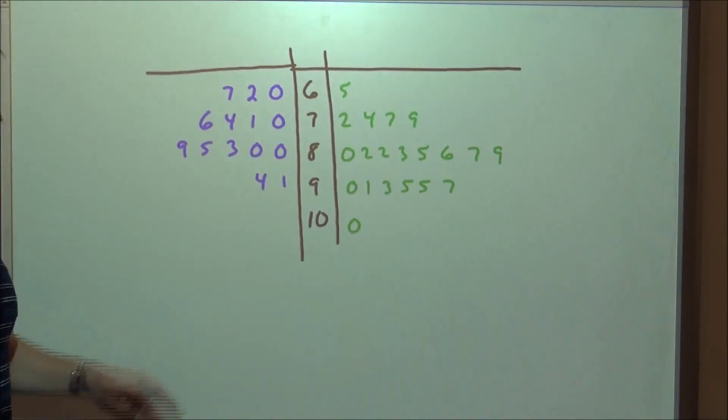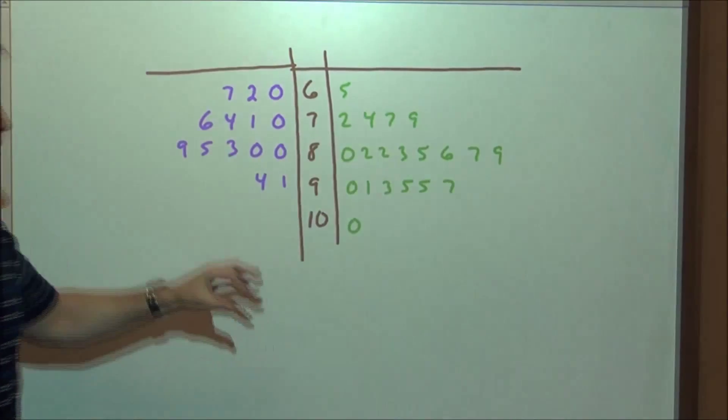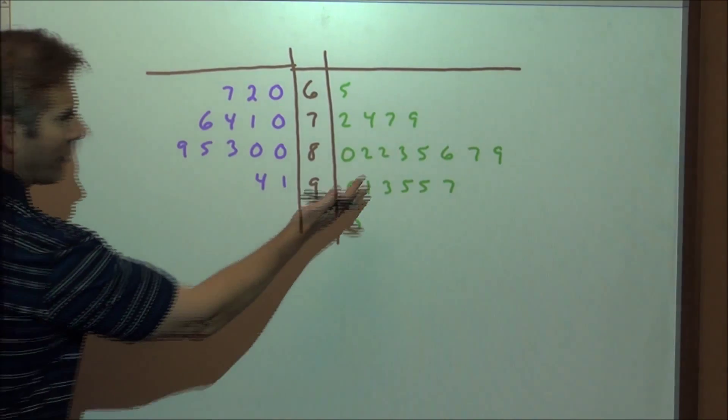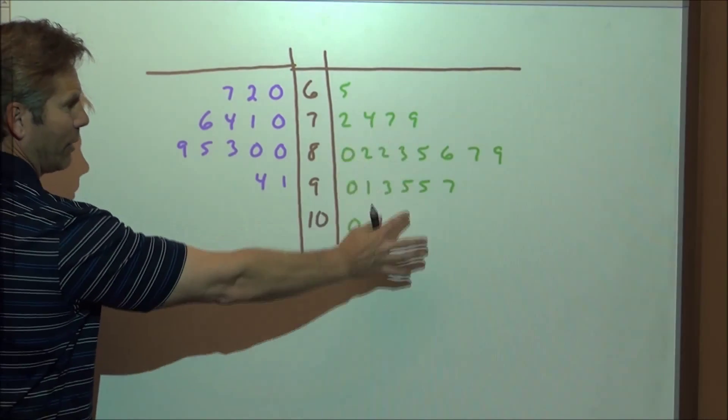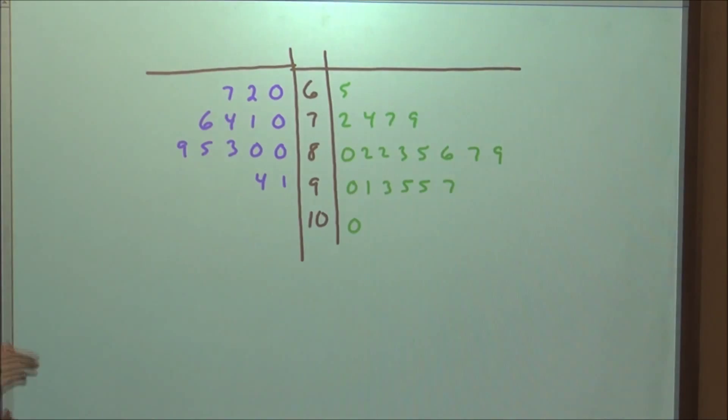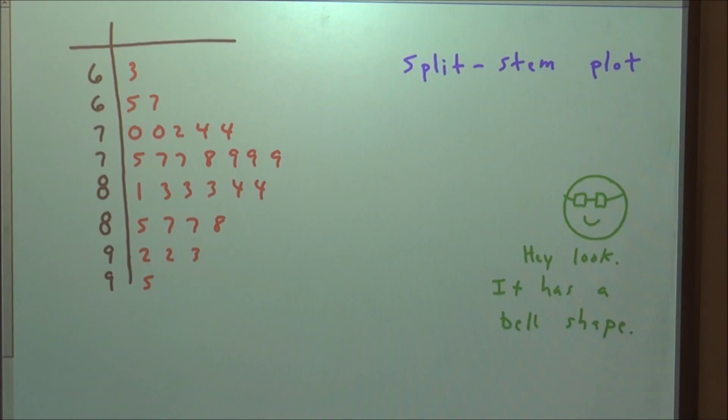Now, we can compare two different classes by doing a back-to-back stem plot. So this could be one class's set of scores, this could be another class, and again, you can see quickly that there's more scores in the higher realm down here, more As down here, as opposed to this class. We'll be making other comparisons later as we get further into statistics.